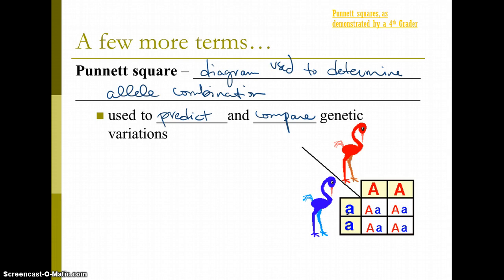The Punnett square is going to allow us to be able to predict and compare the genetic combinations of offspring between these two parents for this single gene in this Punnett square.